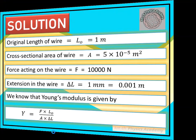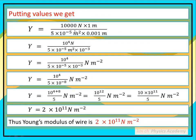Values put کر دی ہم نے۔ F = 10,000 newton، original length = 1 meter، cross-sectional area = 5 × 10⁻⁵ meter square، اور increase in length ΔL = 0.001 meter۔ Meter اور meter کے ساتھ cancel ہو جائے گا۔ 10,000 یعنی 10⁴ newton بن جائے گا اوپر، اور نیچے 5 × 10⁻⁵ اور 0.001 یعنی 10⁻³ ہے۔